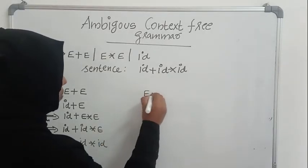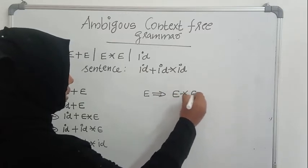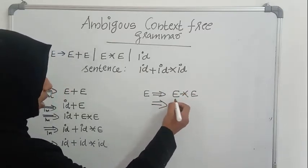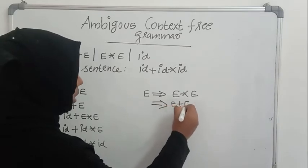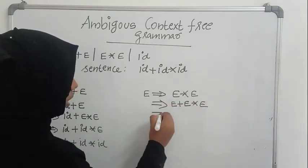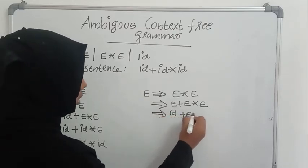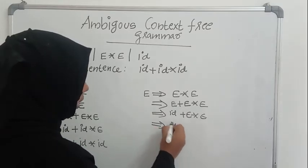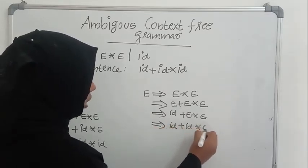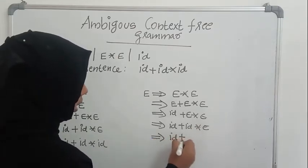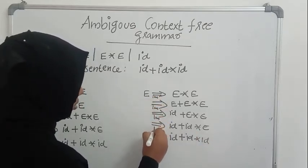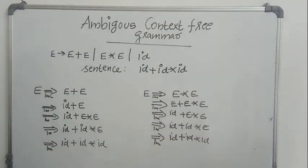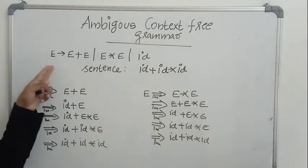We will try it. I am starting with E gives E star E. Now I am replacing the leftmost E with its alternative — E is having an alternative E plus E. So, E plus E star E. Now I am replacing the first E with id: id plus E star E. Now I am replacing the second E with id: id plus id star E. Now I am replacing the third E with id: id plus id star id. So I could get the very same sentence id plus id star id using two very different leftmost derivations. So we can say that this grammar is ambiguous.